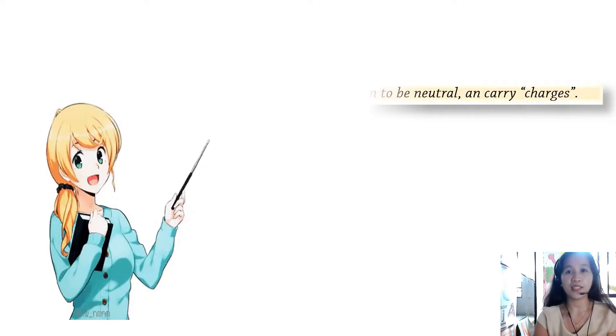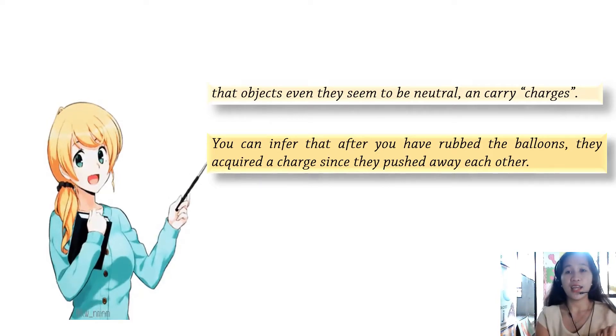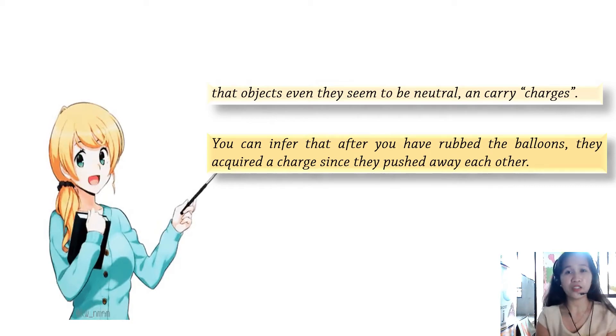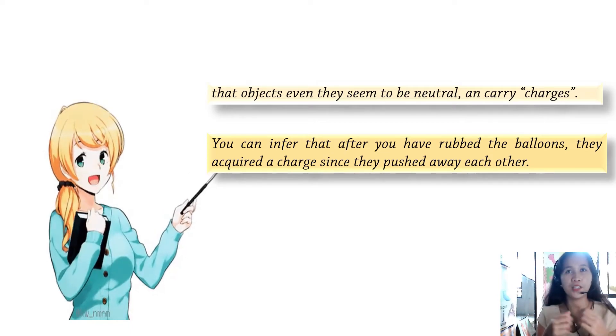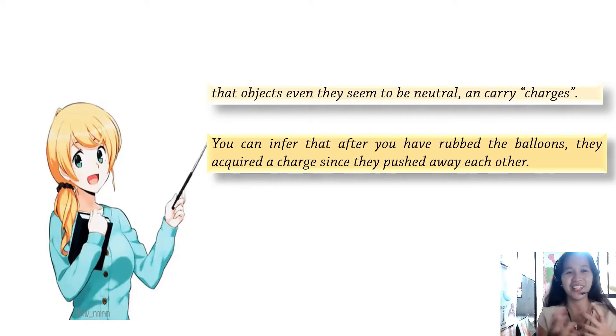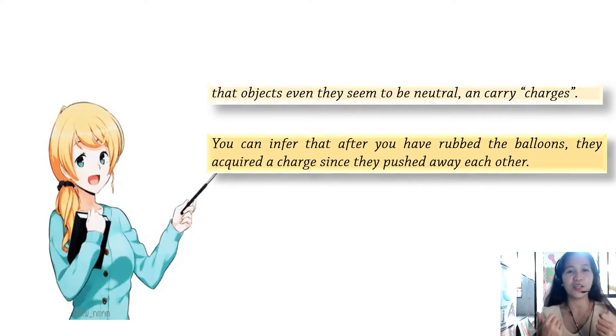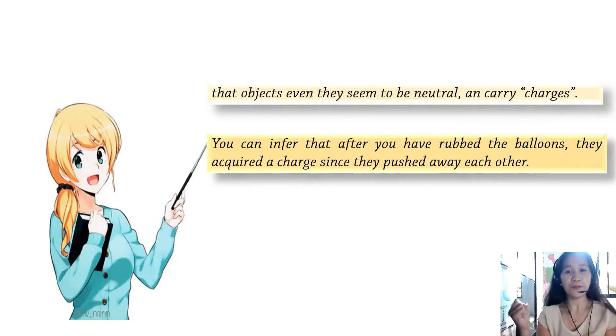From the video, you have seen that objects, even when they seem neutral, can carry charges. You can charge objects by rubbing them against another object — just like what happened to the balloon when rubbed on a shirt. After rubbing, the balloons acquired a charge. Since they pushed away from each other, they acquired the same charge. Just like with magnets, like charges repel and unlike charges attract.